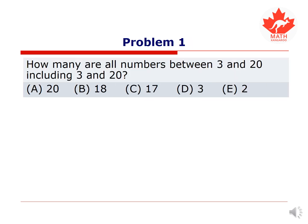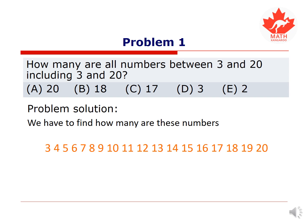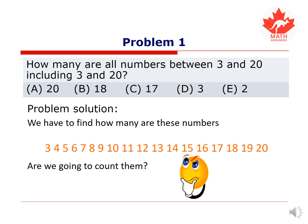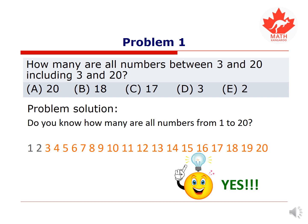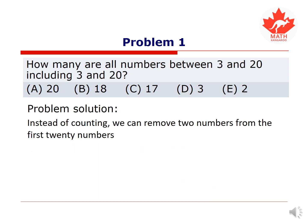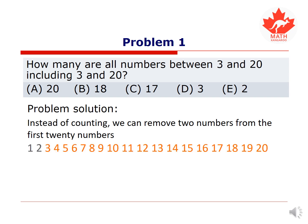The first problem asks how many are all numbers between 3 and 20, including 3 and 20. We are not going to use the multiple choice options — we are going to solve the problem directly. I put all the numbers down here. Are we going to count them? No. There are clever ways to find the number. We know there are 20 numbers from 1 to 20. We can remove two numbers — subtract 2 from 20 — and obtain 18. The answer is 18.